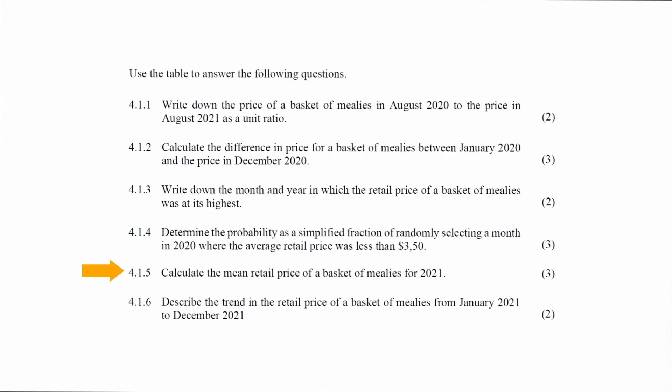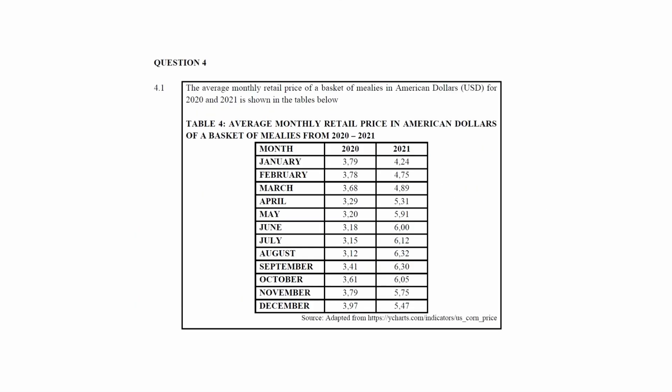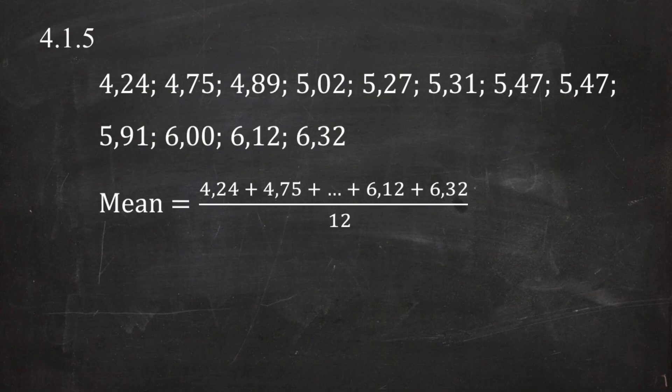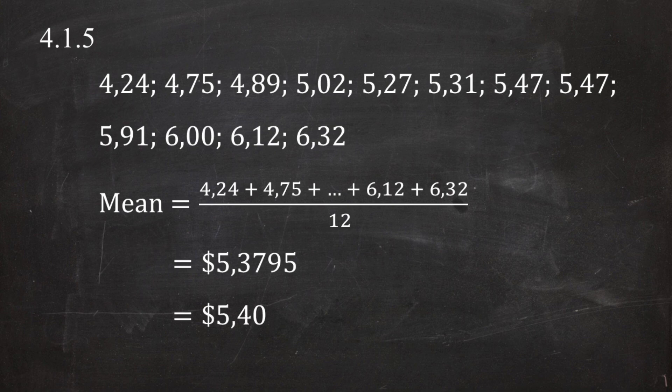In question 4.1.5, you are instructed to calculate the mean retail price of a basket of mealies for 2021. The mean, also known as the average, is the sum of the values in a data set divided by the number of values. The prices for 2021 are summed and divided by 12, giving a mean retail price of approximately $5.40.